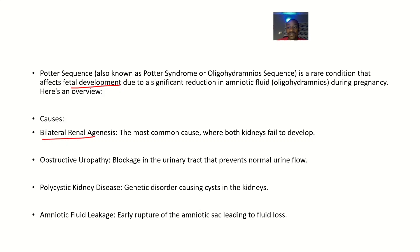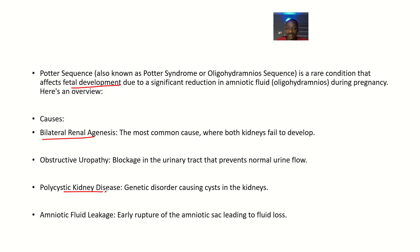The causes include: bilateral renal agenesis, the most common cause, where both kidneys fail to develop — and this is fatal, the individual usually dies. It could also be due to obstructive uropathy, where there is a blockage in the urinary tract preventing urine flow. Other causes include polycystic kidney disease, a genetic disorder causing cysts in the kidneys, and amniotic fluid leakage from early rupture of the amniotic sac, leading to fluid loss.